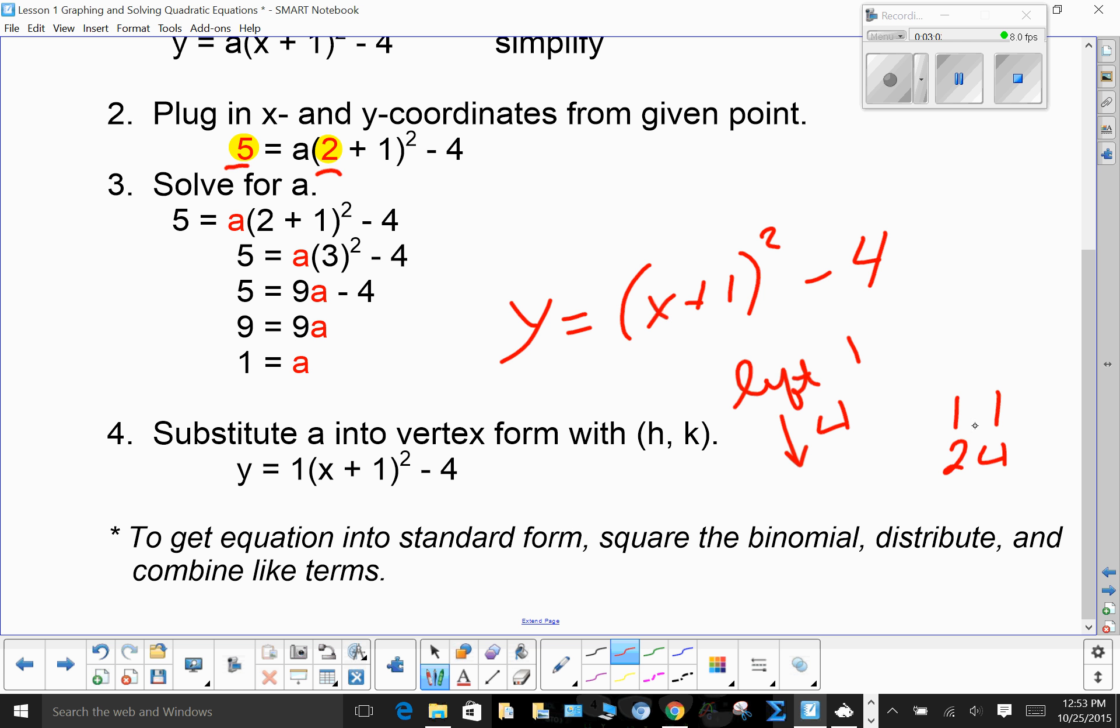Remember, x squared, 1 squared is 1, 2 squared is 4. So this is my parent pattern. And I could then graph this parabola.